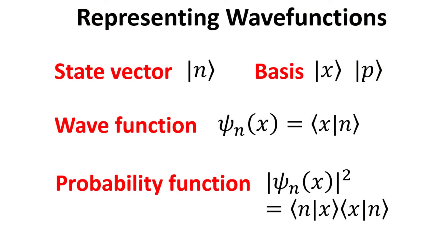In quantum mechanics, the state of the system can be represented by a state vector, herein denoted as the n-ket, where n is an integer that labels the quantum state, such as the energy level. However, this way of representing a quantum state is too abstract. For example, in most applications, we need to know the quantum wave functions at different positions, from which we can obtain the probability function, or the probability to locate the particle at different locations.